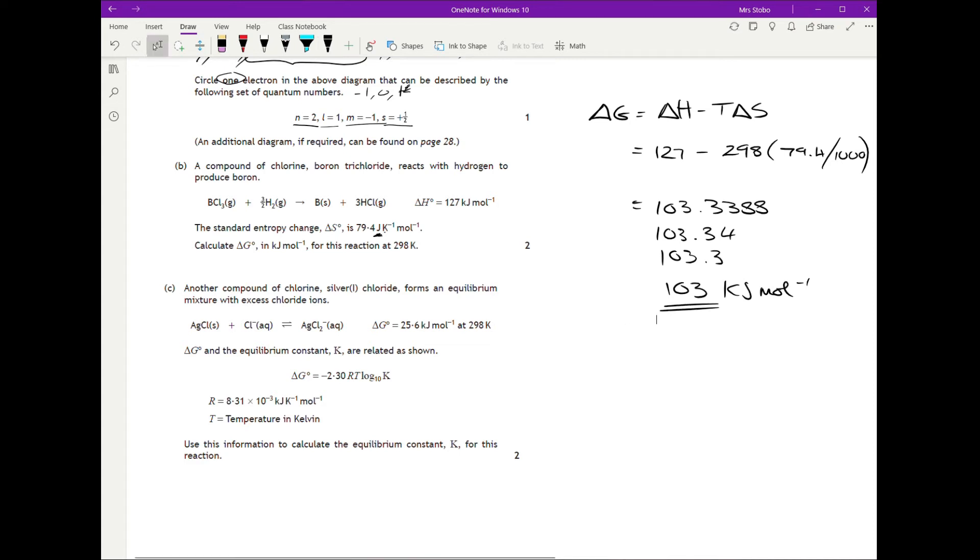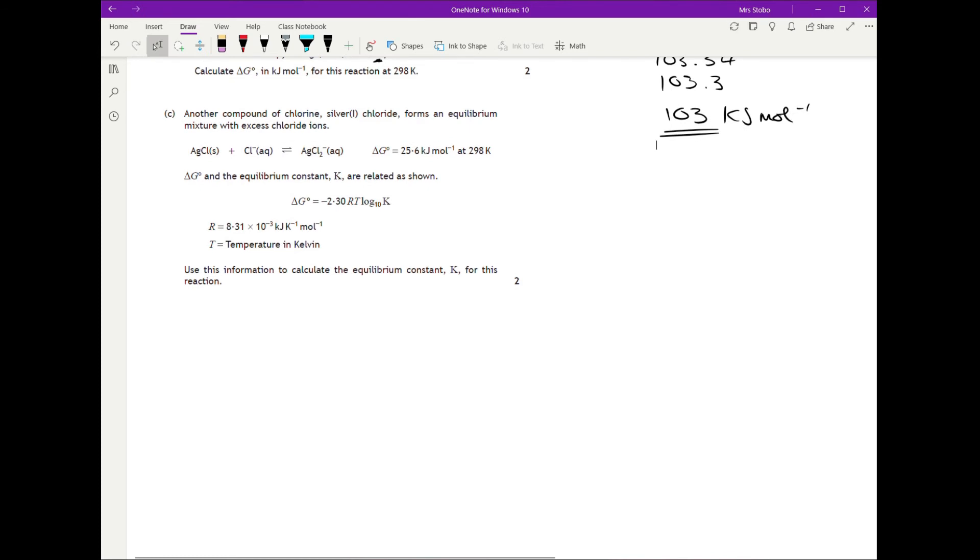Right, another compound of chlorine, silver one chloride forms an equilibrium mixture with an excess chloride ion. Okay, given the equation. Delta G and the equilibrium constant K are related as shown. Right, so this is just applying a formula. I would say it's almost more arithmetic-y math substitution than anything else. We've been given our delta G, we've been given our R here, we've been given our T up there. So we just apply it.